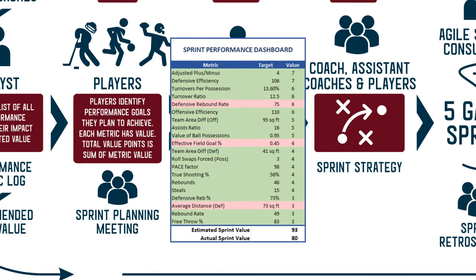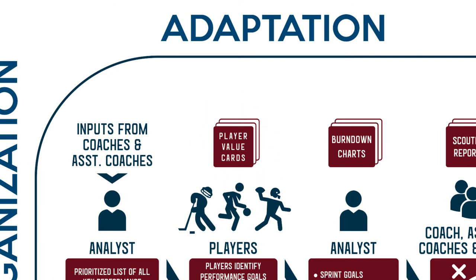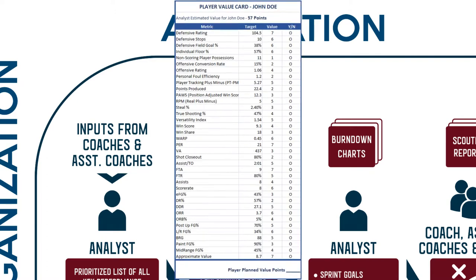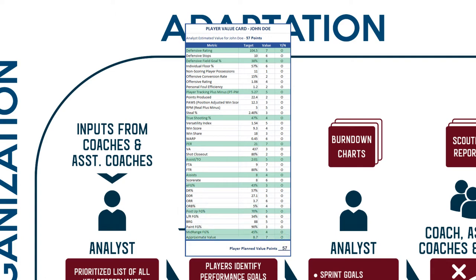The selected items make up the sprint performance dashboard. In addition, the lead analyst provides each player with a custom player value card, which lists the metrics and associated point values based on the player's role and skill set. It is up to the player to determine which metrics they will hit during the sprint to achieve their target goal. Think of player value cards as fantasy sports for players — the combined value points of the metrics they commit to achieving is their planned value, and their fantasy points are the actual value they deliver on the court, field, or ice. This achieves player buy-in, increases sports IQ, and motivates players to contribute in areas that otherwise go unnoticed, such as closing out on shooters or forcing role swaps.